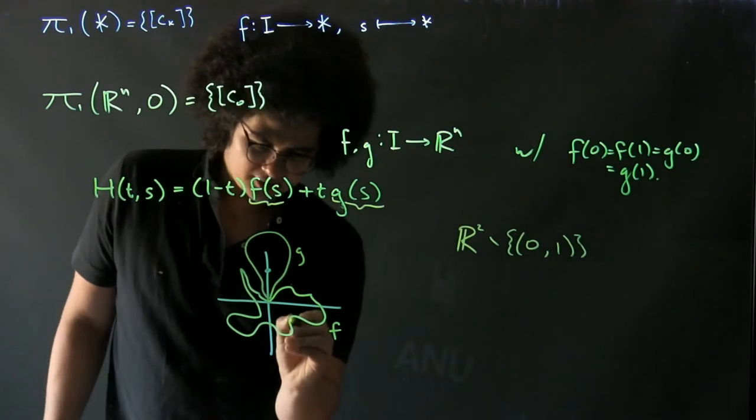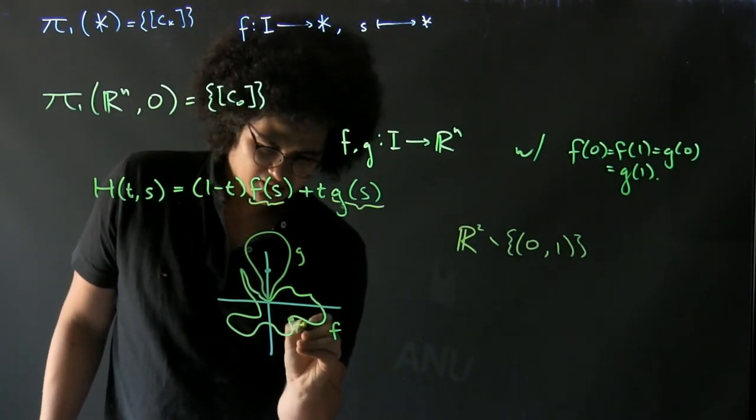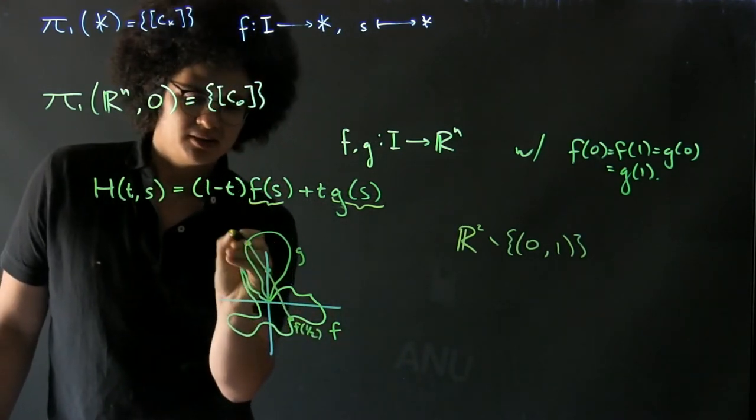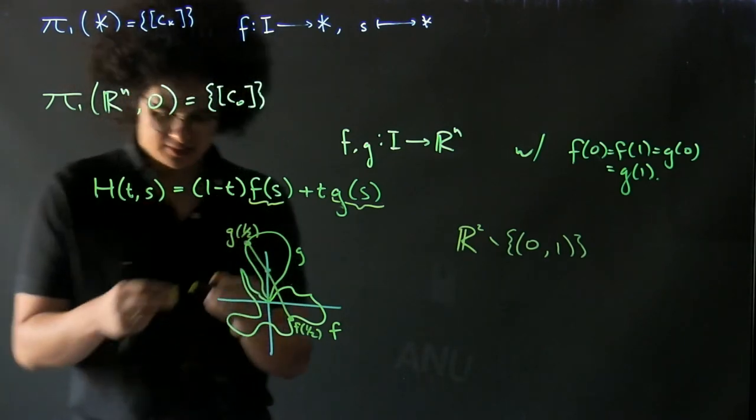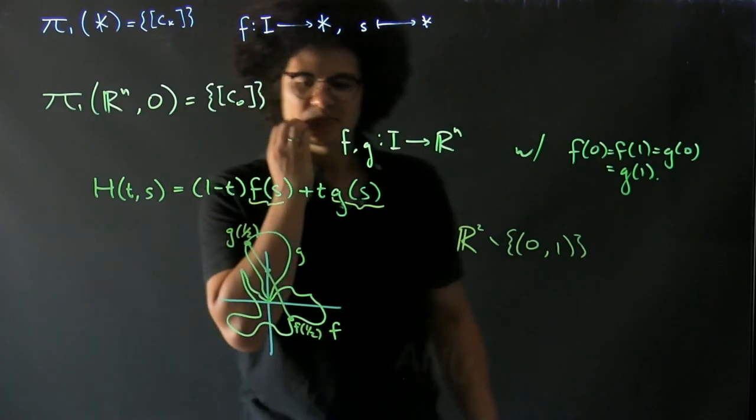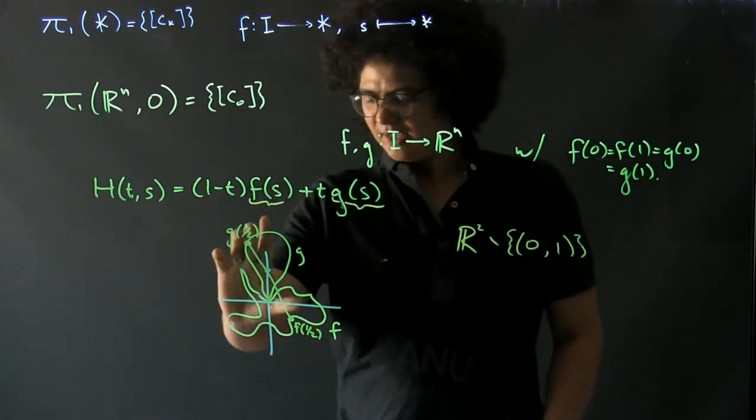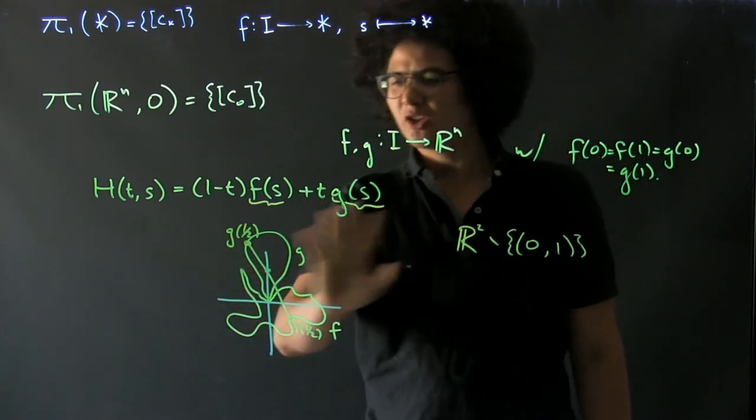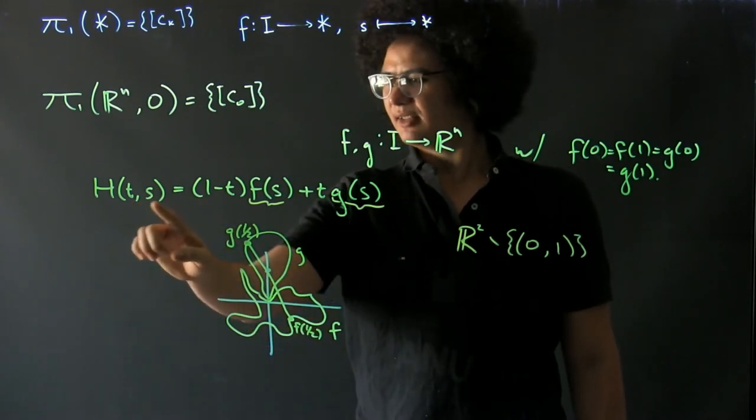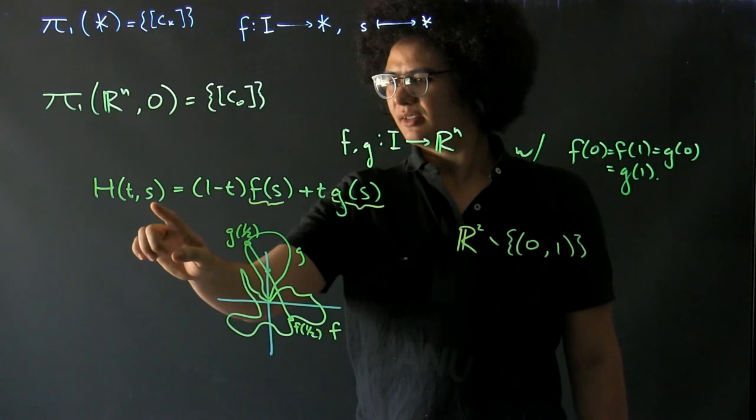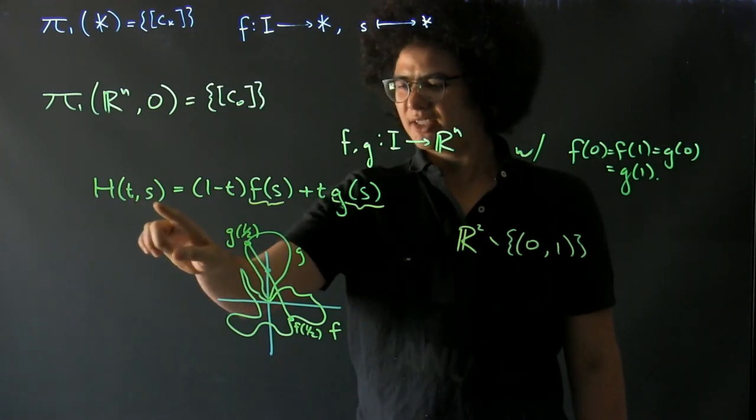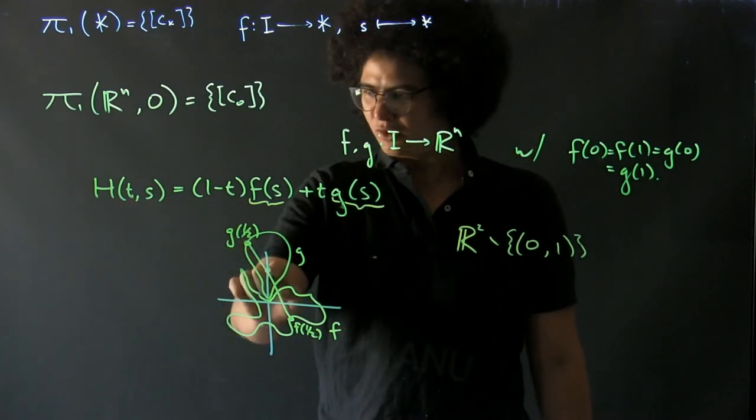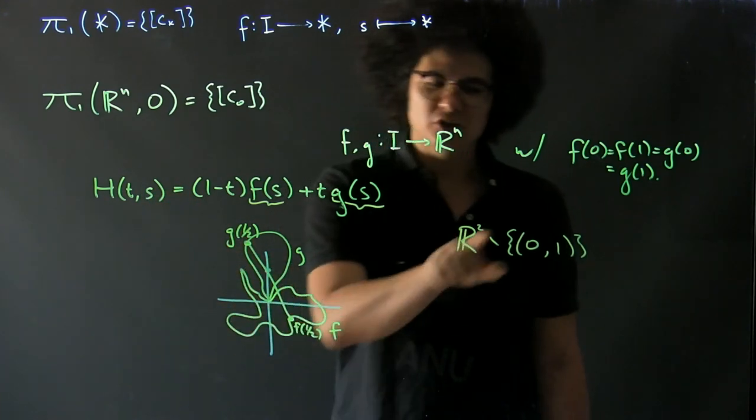Now suppose that this point is F(1/2) and that this point is G(1/2), and that these two are the same distance from the missing point. Well in that case, this homotopy won't work because at H(1/2, 1/2), this will map into a point which is not part of our space. So that's an example of how linear homotopies can fail.